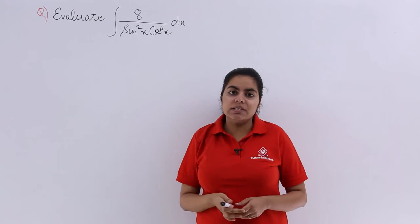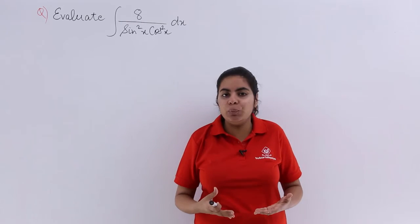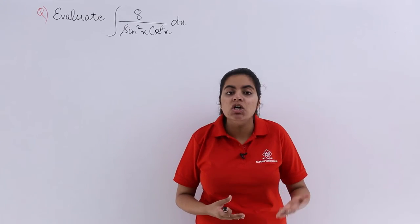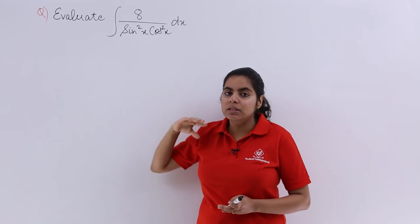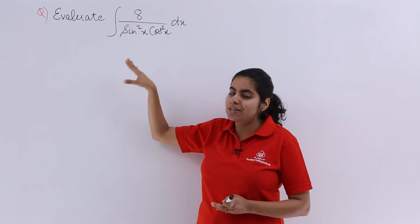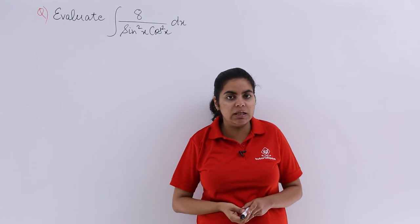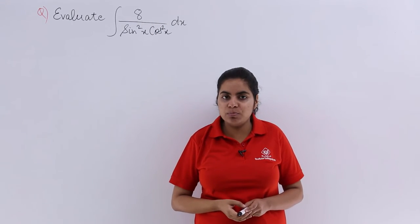Now directly you cannot deal with this. You have to have some manipulation to this question done so that you can solve it further. Now if I take 8 common, what becomes the next step? It becomes 1 upon sin square x cos square x in the denominator. Again not of much benefit to us.